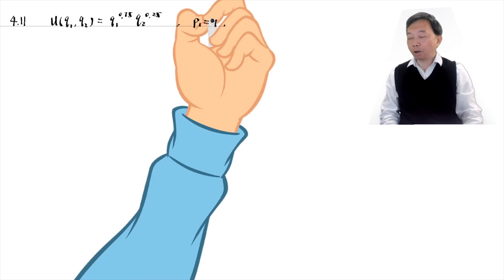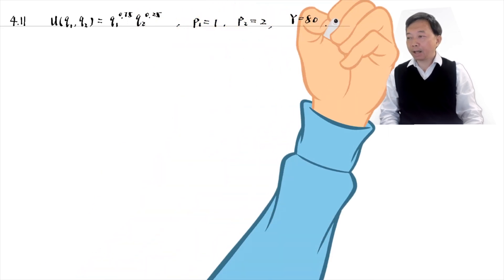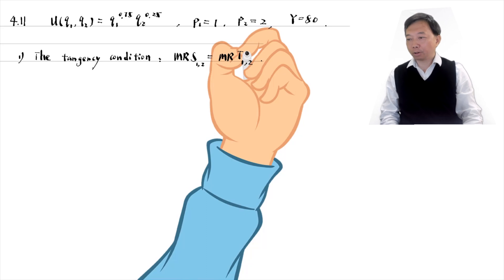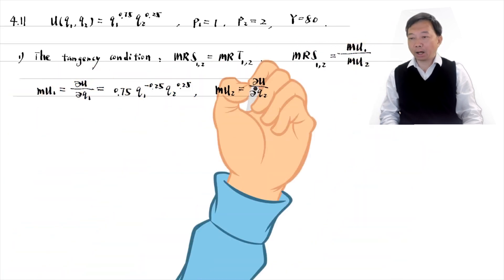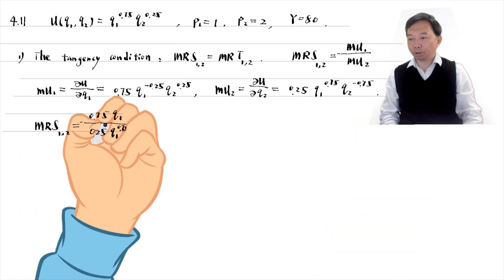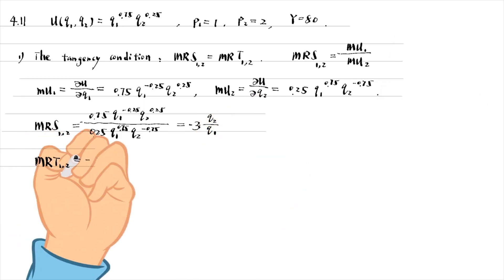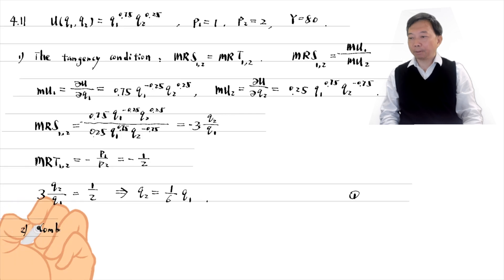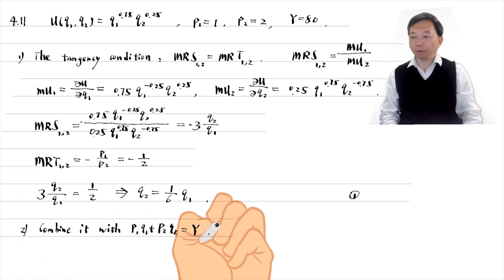We use the shortcut approach to solve the problem — that is, to combine the tangency condition and the budget constraint to find the interior optimal bundle of goods that maximizes the consumer's utility. The utility function is the Cobb-Douglas form. In the first step, we find the tangency condition. At the optimal choice, the marginal rate of substitution equals the marginal rate of transformation. The former is the negative marginal utility ratio, and the latter is the negative price ratio. In the second step, we combine it with the budget constraint and solve for the optimal bundle of the two goods.